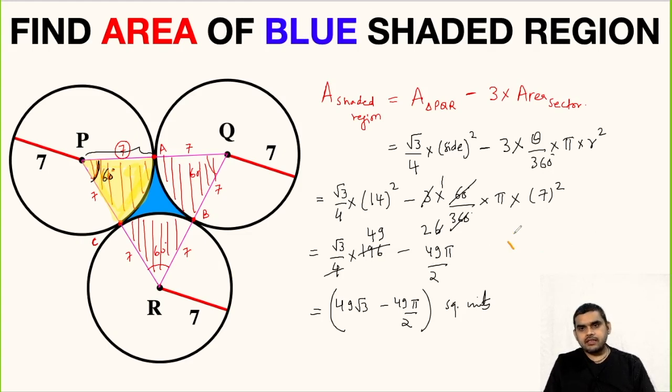So if we want, we can substitute root 3 as 1.732 and pi as 3.14 and do the calculation. So 49 root 3 will be 84.87 roughly, and 49 pi by 2 will be roughly around 76.96.